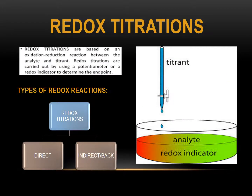Next is the redox titration. Redox titrations are based on an oxidation-reduction reaction between the analyte and the titrant. Redox titrations are carried out using a potentiometer or a redox indicator to determine the end point. In this example of redox titration, the titrant is added from the burette to the analyte, and the redox indicator is already added to the analyte.